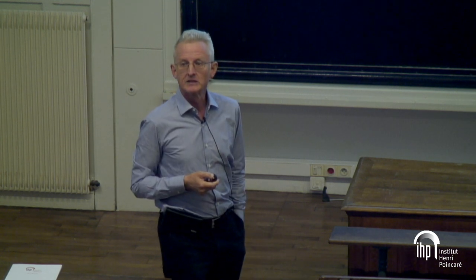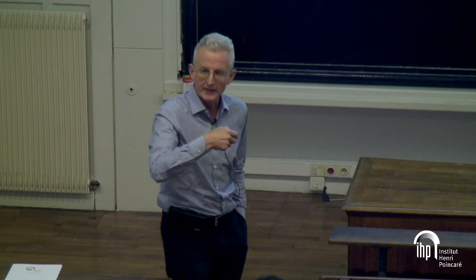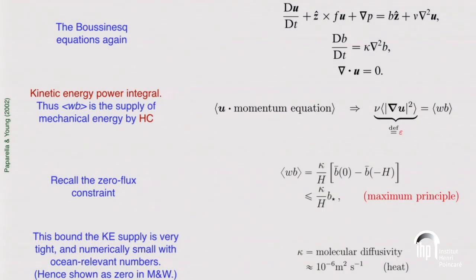Suppose I add wind forcing to this system — perhaps even time-dependent wind. The zero-flux constraint still holds, since it follows just from the no-flux boundary condition at the bottom. When forming the power integral, there's an extra tau-dot-u term from the wind at the surface. There's no easy way to bound tau-dot-u, but the convective energy production remains as weak as ever — it's simply additive and still constrained by the zero-flux constraint.